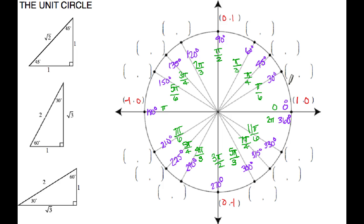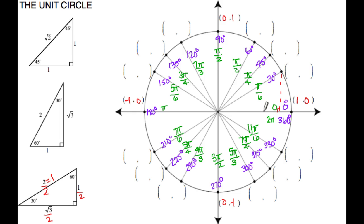I'm going to do the 30 degrees first. Your radius for your unit circle is 1 unit, which means the hypotenuse for the triangle has to be 1 unit. The triangle I have set up is 2 units, so I'm going to cut it in half so that my radius is 1 unit. If I were to take this triangle and lay it on top of the circle, my horizontal distance is my x-coordinate for my ordered pair, which is root 3 over 2. The vertical distance is 1 half.